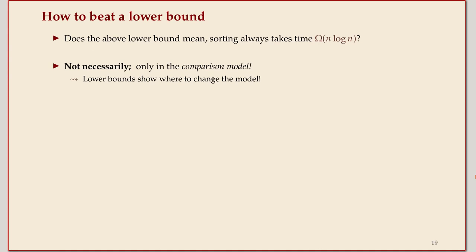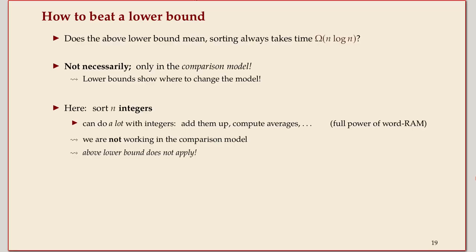And that's another way to see lower bounds. Lower bounds are great because they're a strong statement about impossibility. No comparison-based sorting algorithm can be better than n log n comparisons. But it's also a pointer to where you can change the model so that faster algorithms become possible. And here's one specific model outside of the comparison-based model: sorting numbers.